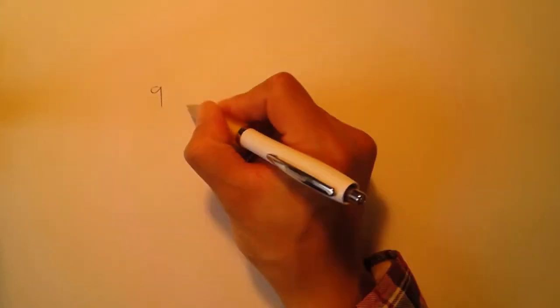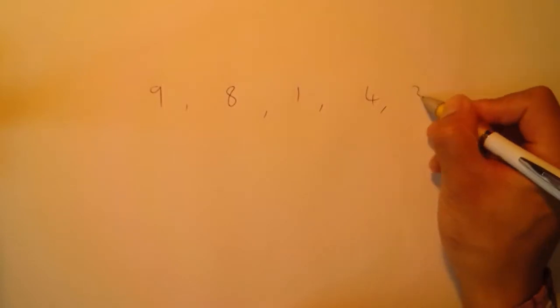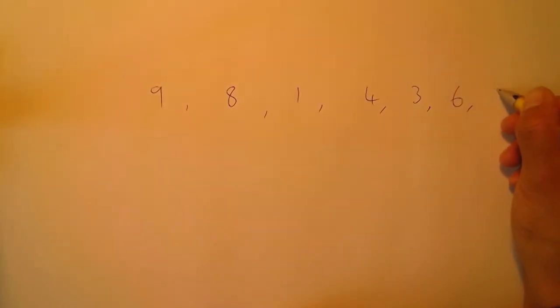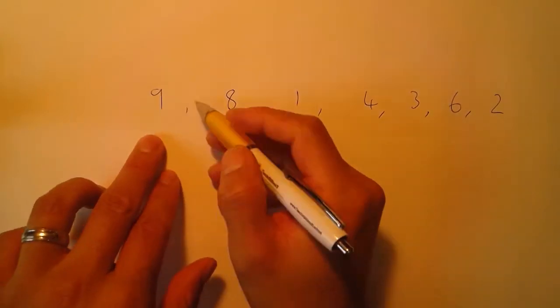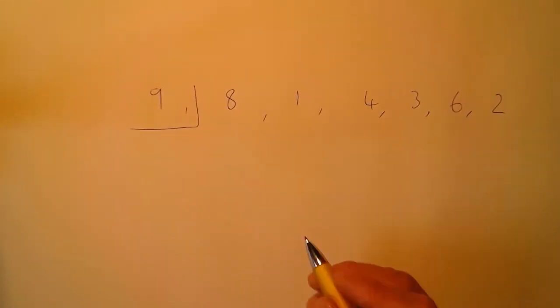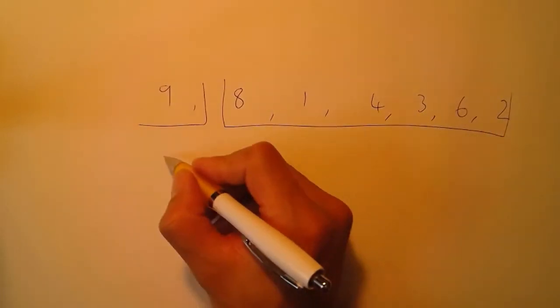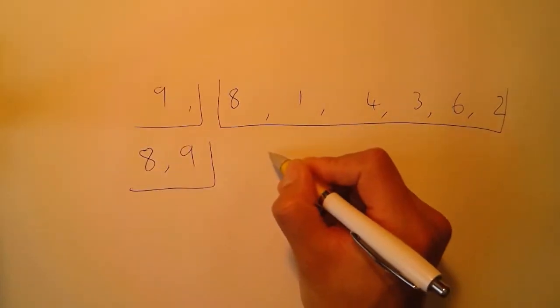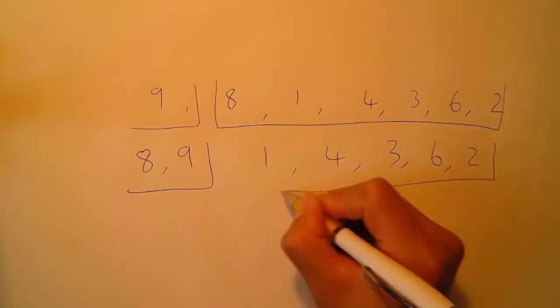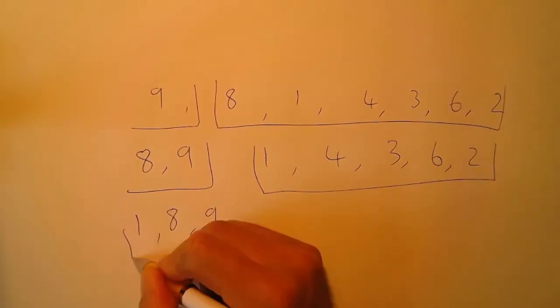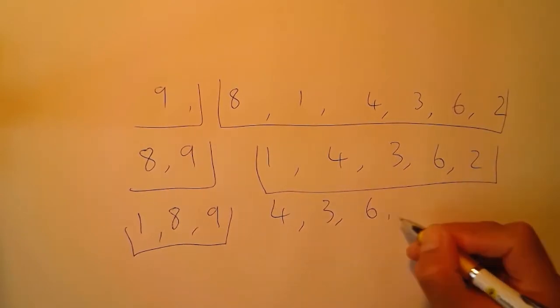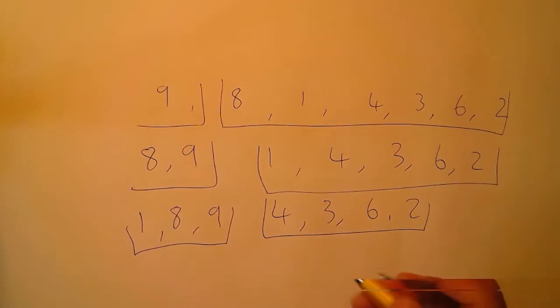Let's see that sort on paper. Say we have six numbers out of order: 9, 8, 1, 4, 3, 6, 2, and we'll try to put them in order. First, 9 becomes our sorted array and the rest is our unsorted array. Next iteration: 8 and 9 are in sorted order, leaving 1, 4, 3, 6, 2 unsorted. After that, 1 is inserted so the sorted array becomes 1, 8, 9, and the unsorted array is 4, 3, 6, 2.